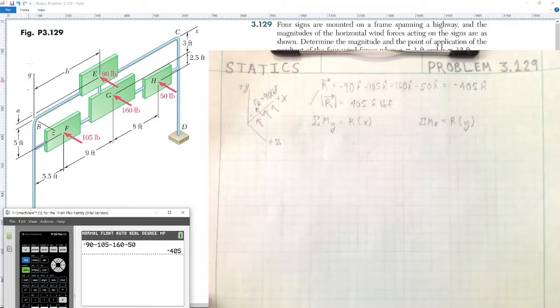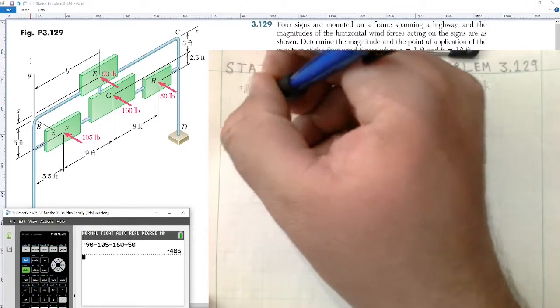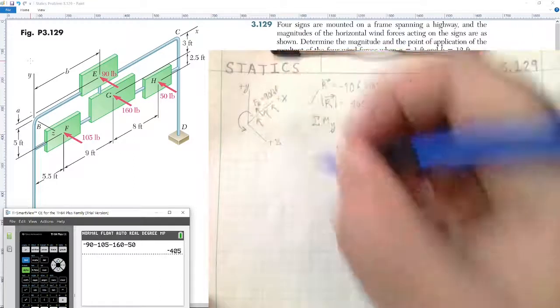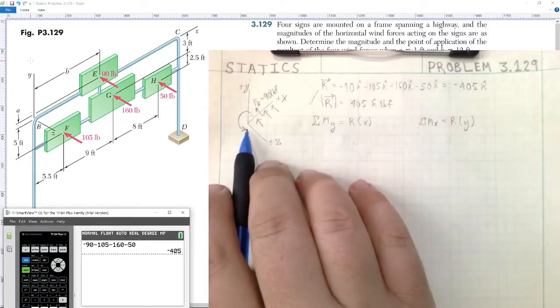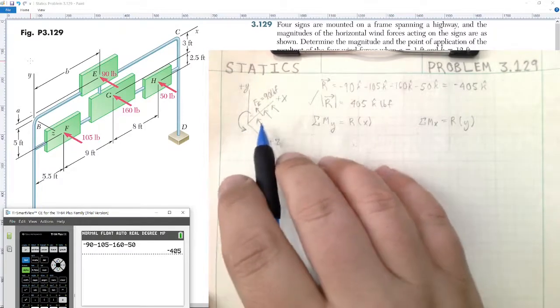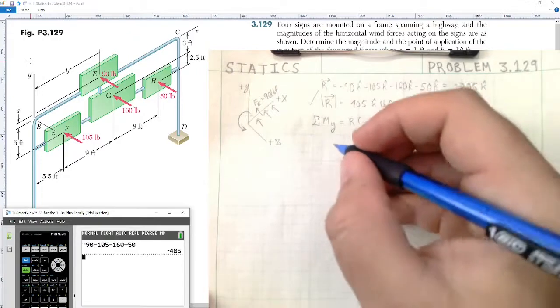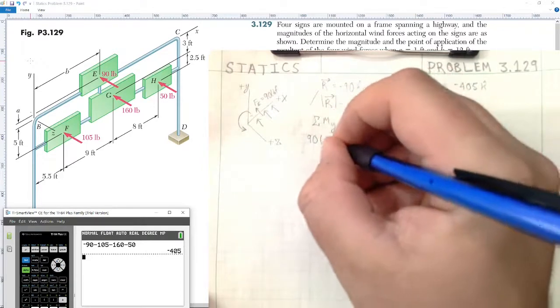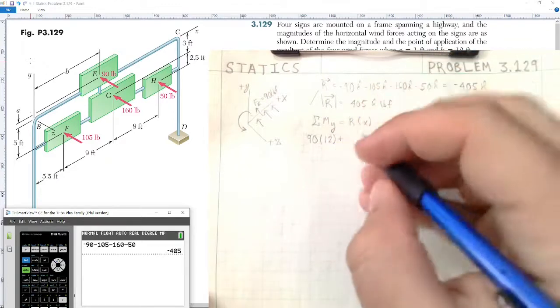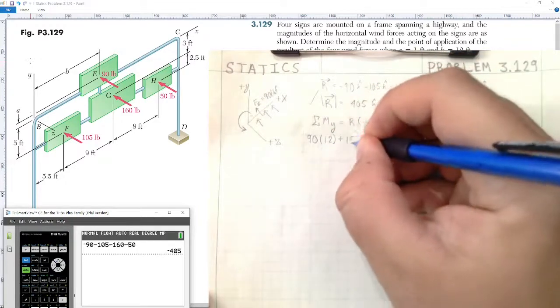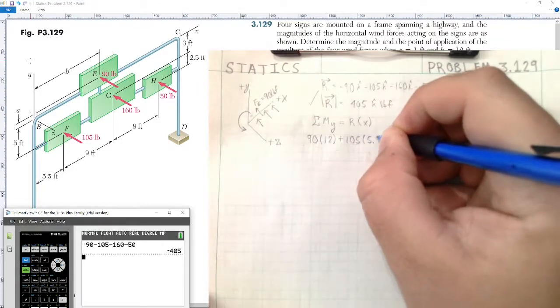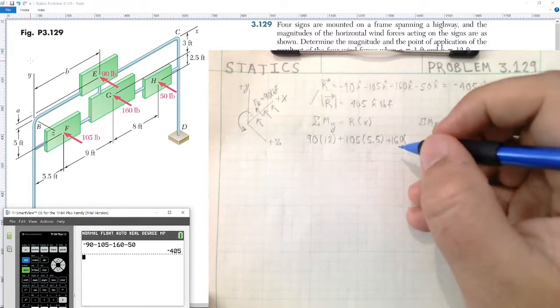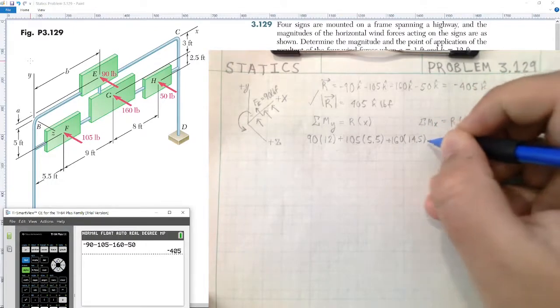So let's go ahead and sum the moments about the Y-axis. Looking vertically, notice this Y-axis is vertical. The moment about it, all the forces being applied on the right side, which will create a counterclockwise moment resultant. So there will be a positive moment about the Y-axis. We have 90 pounds multiplied by its position B, which is 12 feet, plus 105 multiplied by 5.5, plus 160 pounds, and it's being applied at a distance of 9 plus 5.5, which would be 14.5 feet.